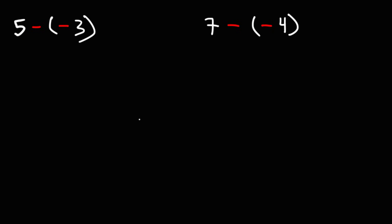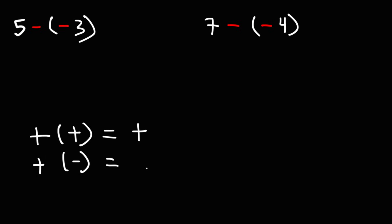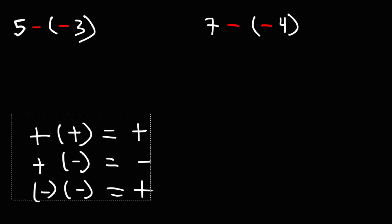Well here's some things you want to know. Whenever you have a positive number times another positive number you're going to get a positive result. A positive times a negative will give you a negative, and a negative times a negative will give you a positive. You may want to write that down — we're going to use that a lot in this video.